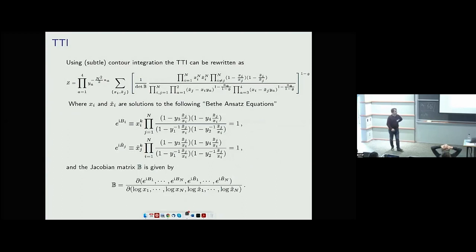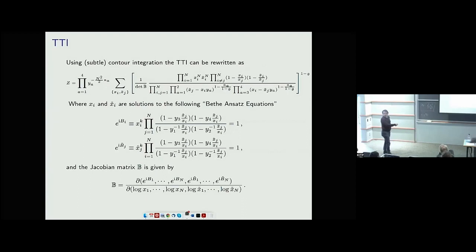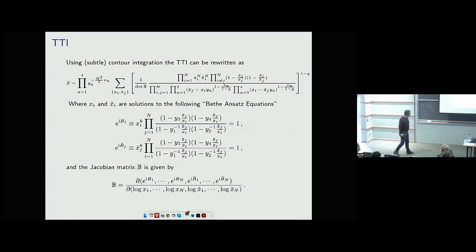To find the values at each residue, you have to solve a complicated algebraic problem — and since this conference is called 'Gravity from Algebra,' this is an example of that! You have to solve for these x's in terms of the y's: you solve 2N algebraic equations which they call Bethe ansatz equations — which in certain audiences introduces some confusion, since there's no integrability that I know of here. If you solve these and put them back in the formula, you get the answer for the path integral.